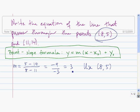So now that we have the slope and a point on the line, we're ready to use the point-slope formula to find the equation of the line.